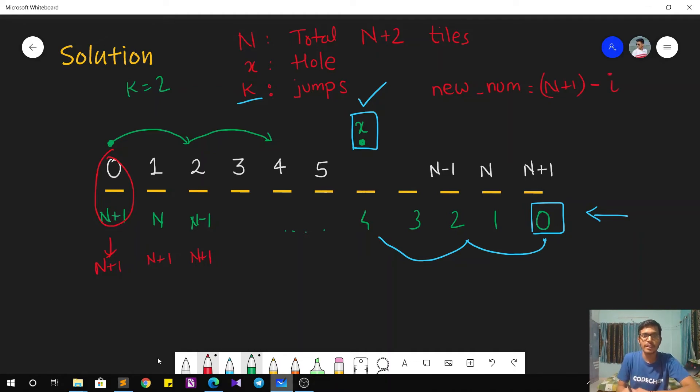For any particular number, let's say 5, if I want to find the new numbering, then it will be n plus 1 minus 5. So in that manner, I can find the new number for the particular number x and check whether x is a multiple of k. If not, then is the new number multiple of k.